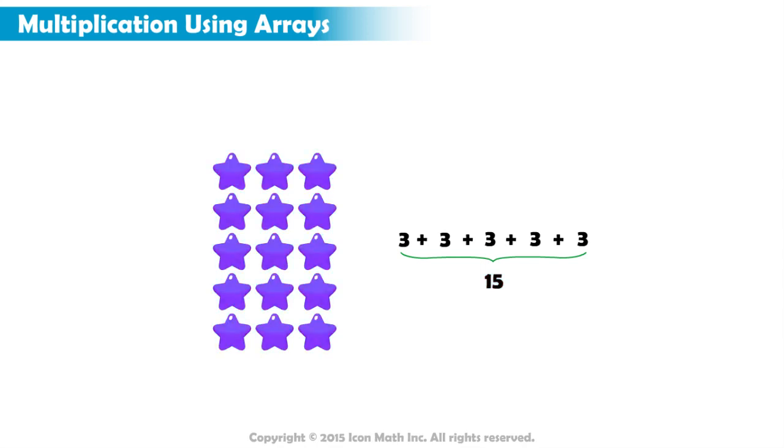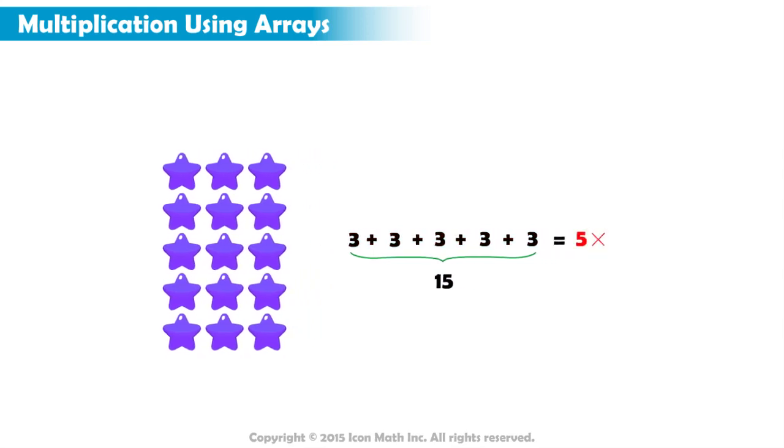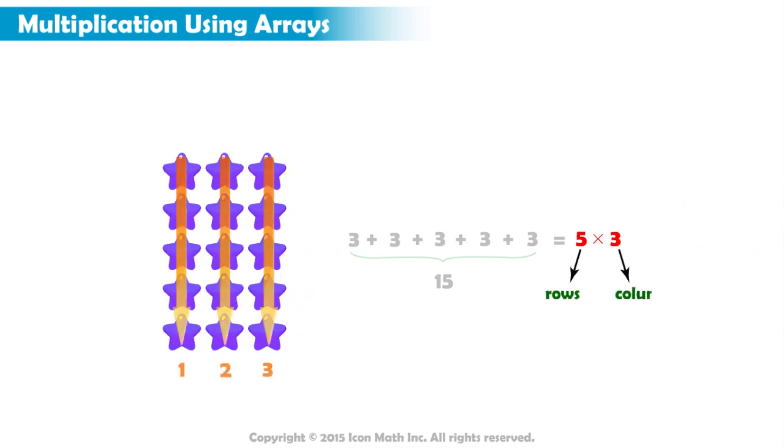As we have learned, we can represent repeated addition using multiplication as five times three. Did you notice something? If you look at five times three, you will find that five is the number of rows and three is the number of columns.